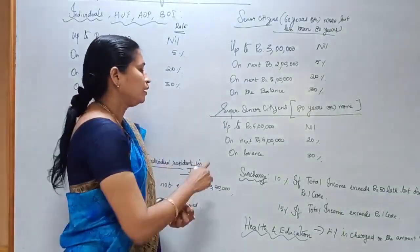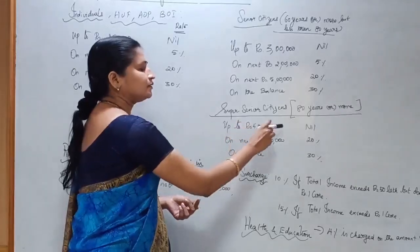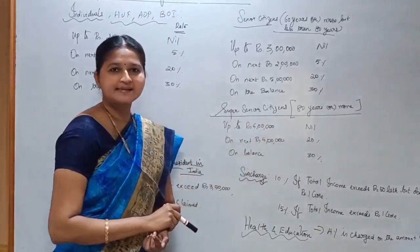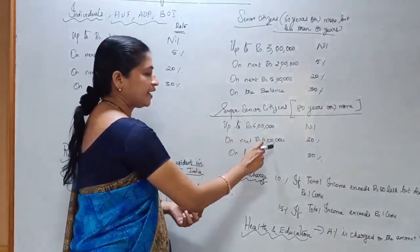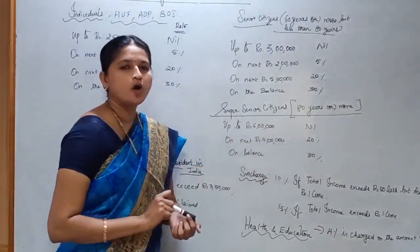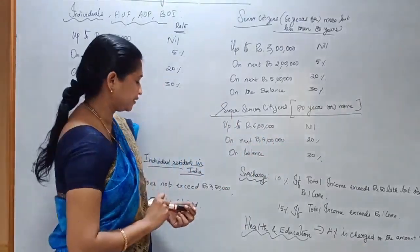For super senior citizens — those aged 80 years and above — up to Rs. 5,00,000 the tax is nil. On the next Rs. 5,00,000 the rate is 20%, and on the balance income the rate is 30%.